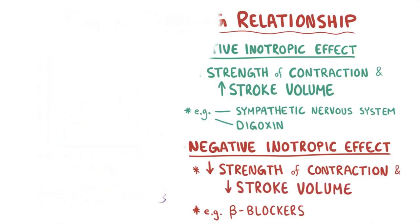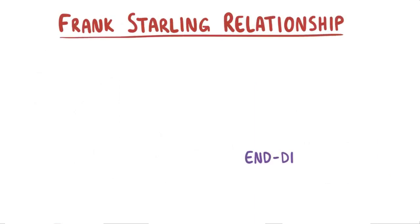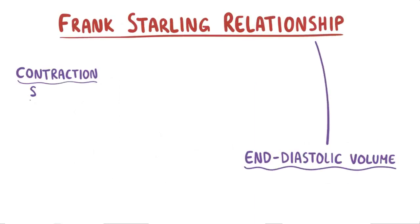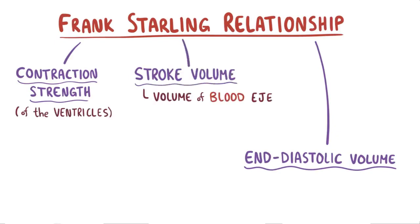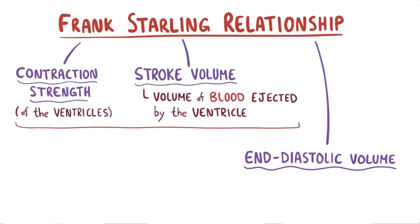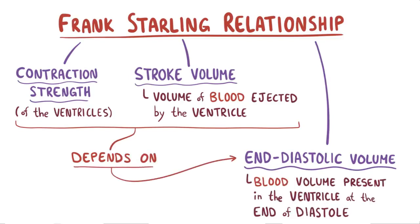As a quick recap: the Frank-Starling relationship between end-diastolic volume, contraction strength, and stroke volume states that the strength of ventricular contraction and the volume of blood ejected by the ventricle depends on the blood volume present in the ventricle at the end of diastole.